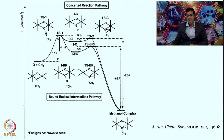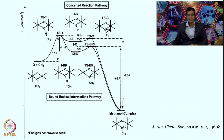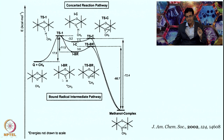This concerted pathway gives the same product — methanol — as a methanol-bound intermediate that is then dissociated. Alternatively, the second mechanism involves the same C–H bond breaking and O–H bond formation, but an intermediate is involved — a Q* oxo-hydroxy intermediate — along with formation of a CH₃ radical. The CH₃ radical subsequently reacts with OH radical to give CH₃OH. We will come back to this in the next class.